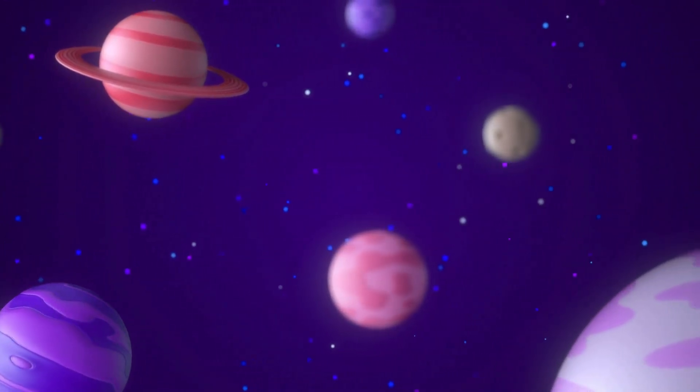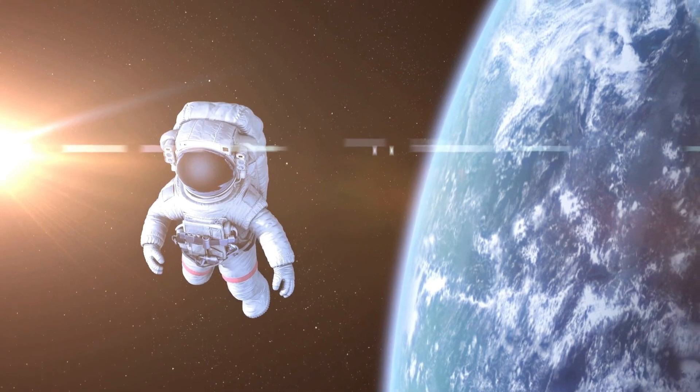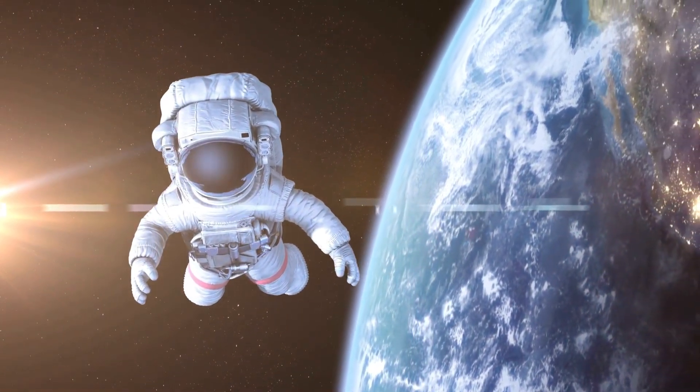Our current comprehension of the solar system delineates a tapestry of celestial entities, numerous asteroids, a select group of dwarf planets, and a count of just eight classical planets.